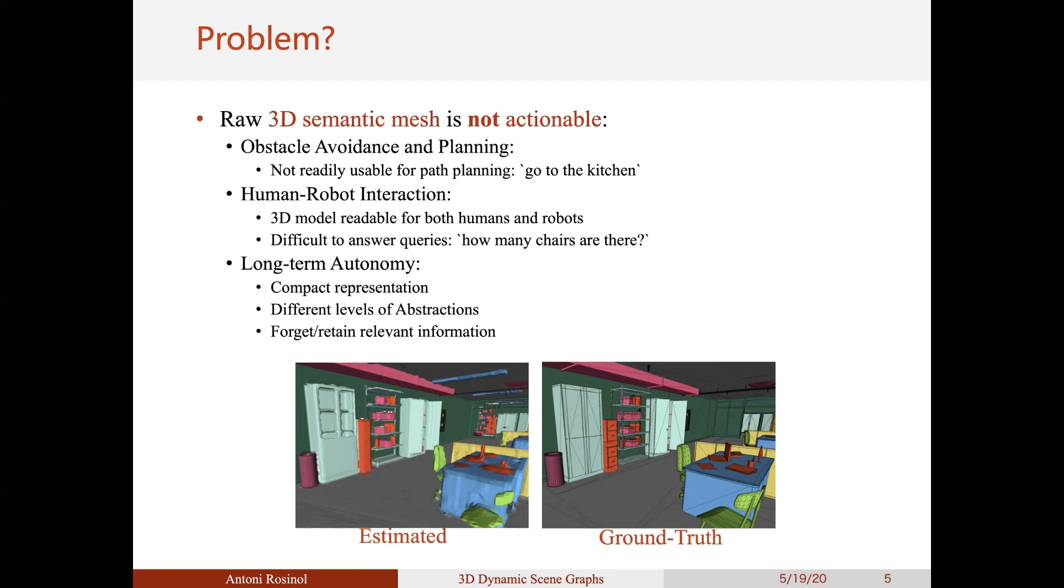Finally, although a 3D mesh is a more compressed representation of the scene than a volumetric grid, it is still fairly dense. Therefore, we would like to transmit to new robots entering the scene perhaps just the information corresponding to the rooms adjacent to its position. To achieve these requirements, we propose a 3D dynamic scene graph that we also refer to as DSG.